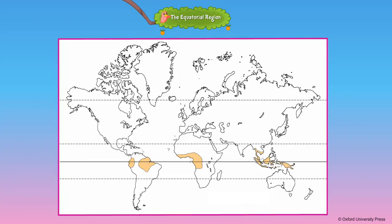The Equatorial Region is the area that lies on either side of the equator, between 10 degrees north and 10 degrees south. You will find the equator passes through the Amazon Basin of Brazil in South America, the Zaire Basin in Africa, and the Indonesian Islands of Asia. These are the areas that experience equatorial climate.